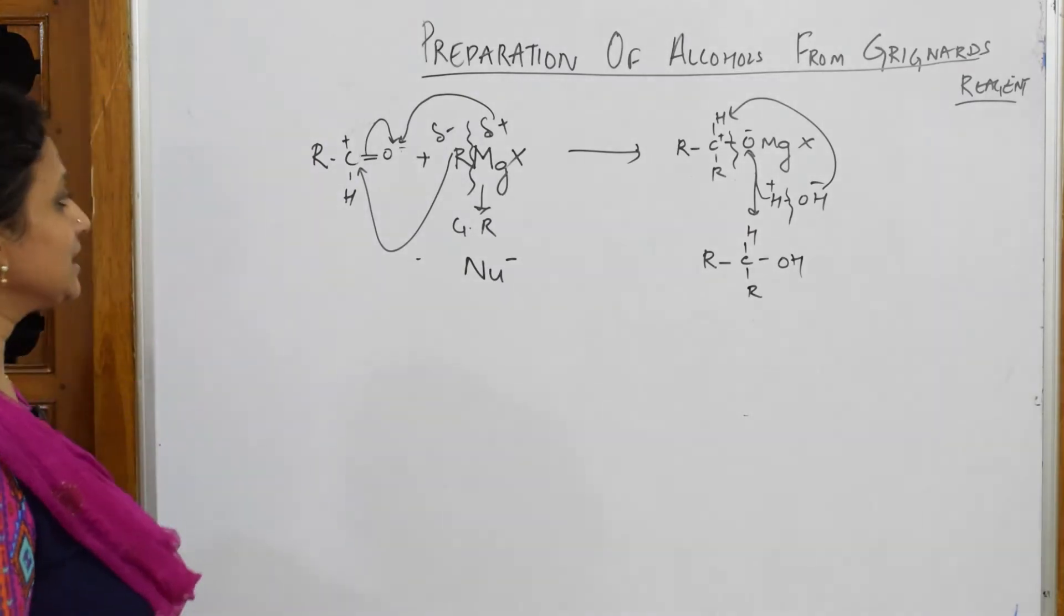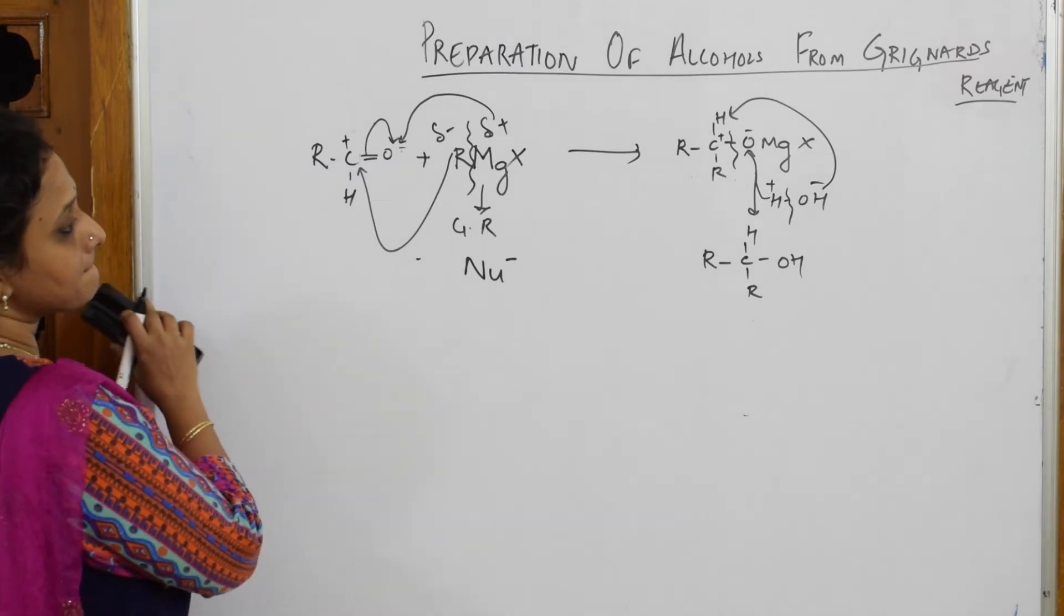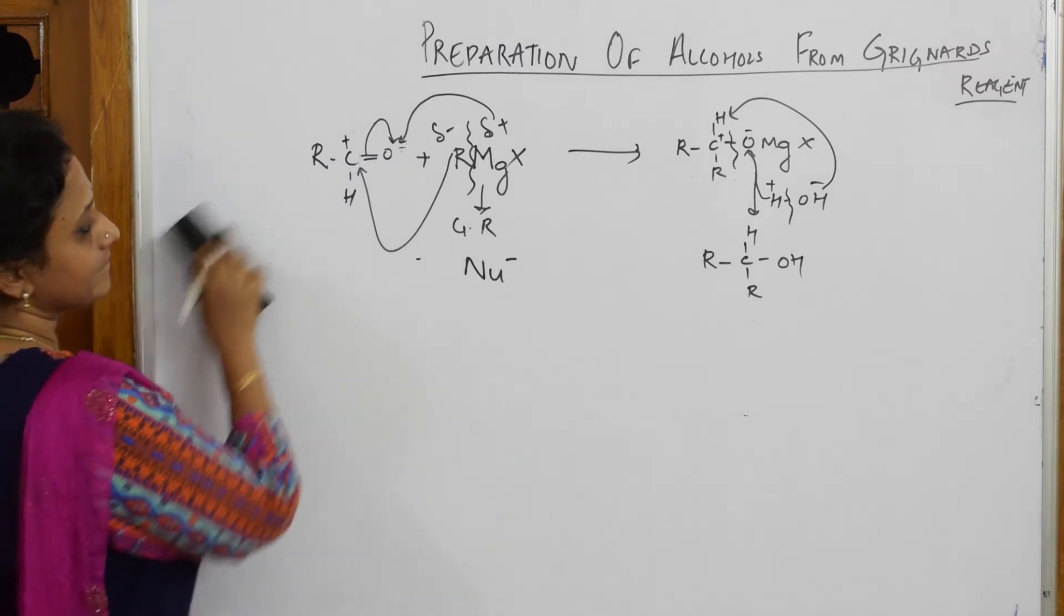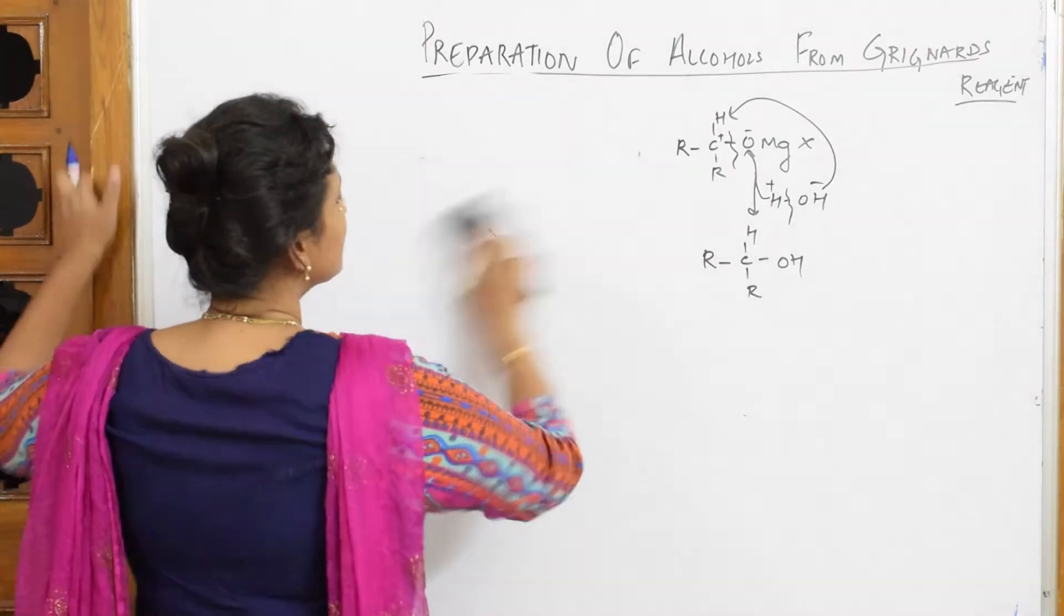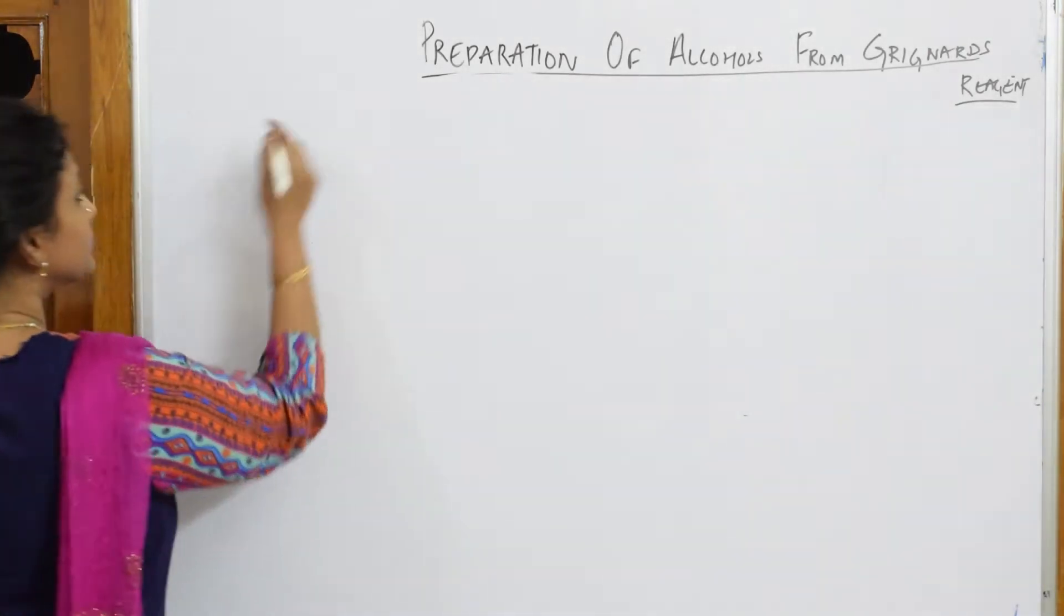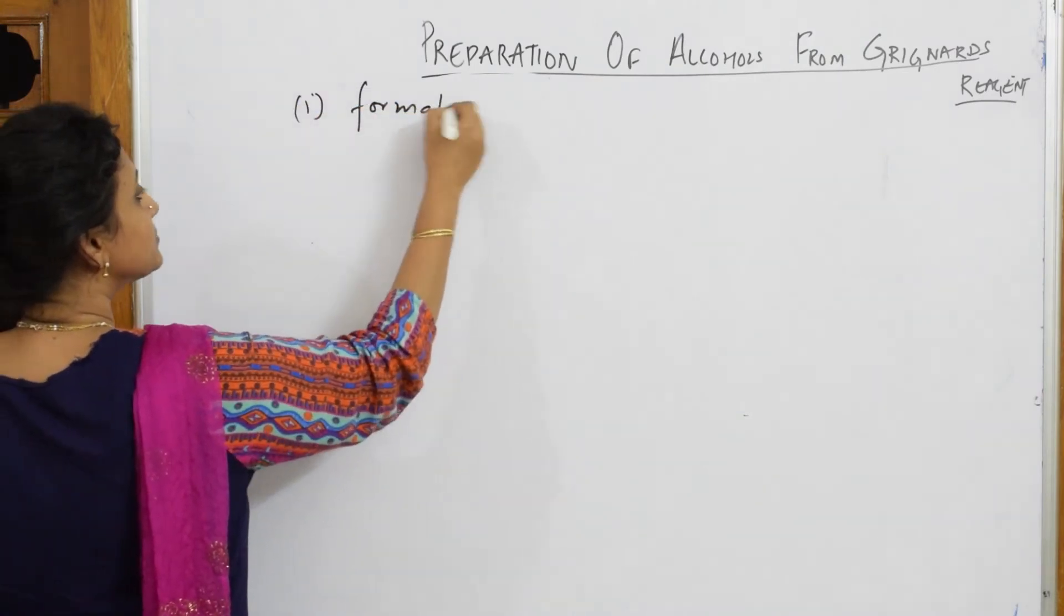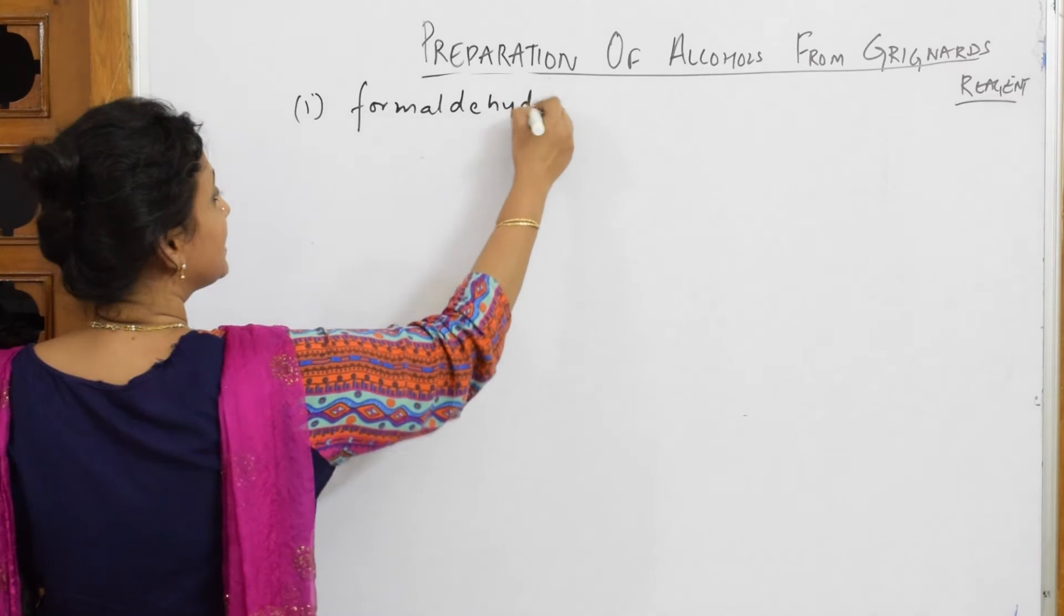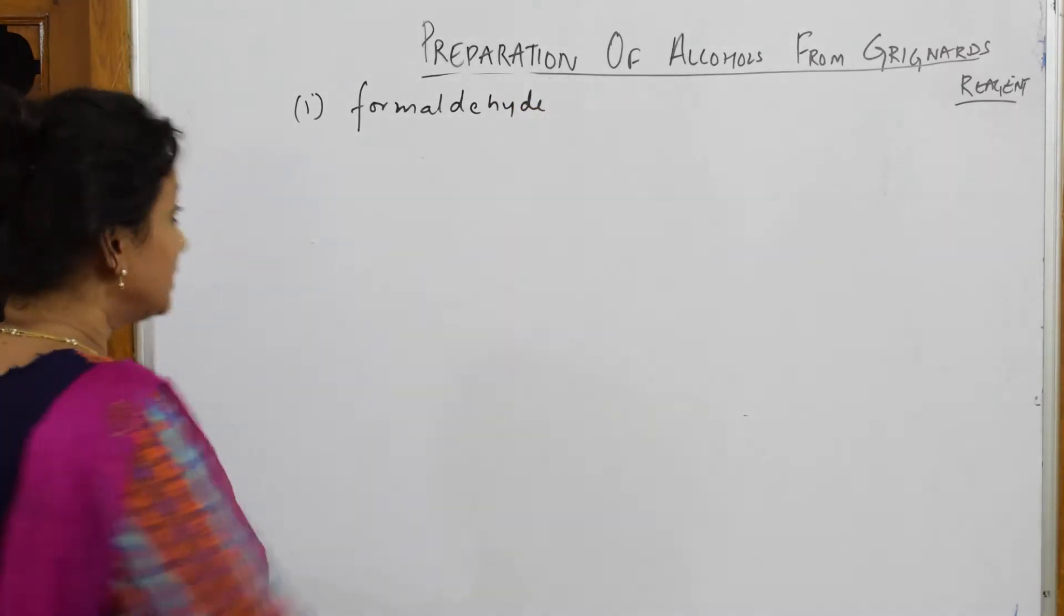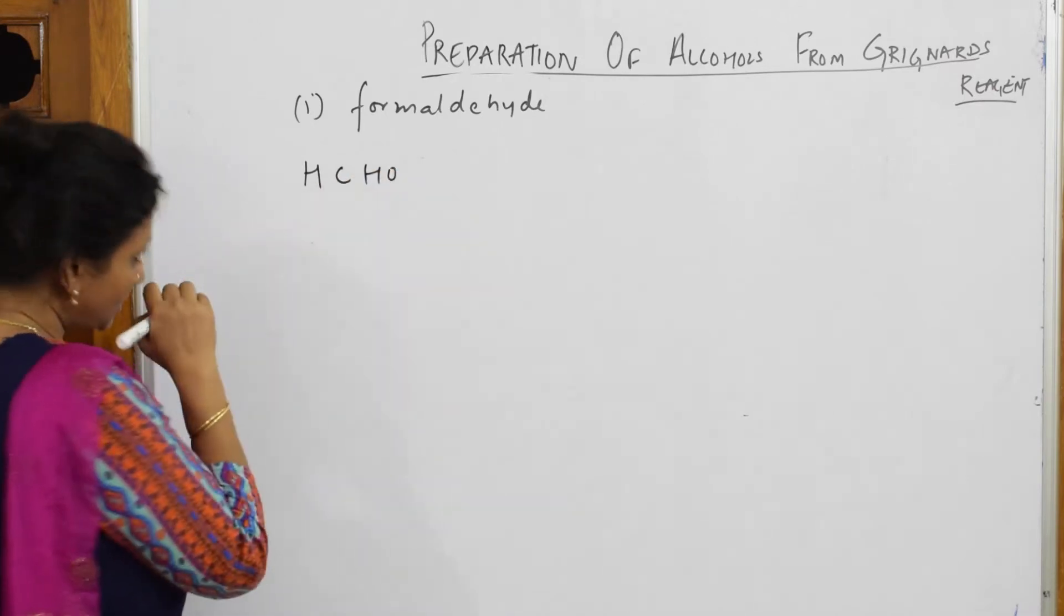This is what we are going to get. And now let us see how to do along with the example. Now let us take one example and see what can we do. First I am going to take formaldehyde. Let us see what happens with formaldehyde. What is formaldehyde? The basic CHO.